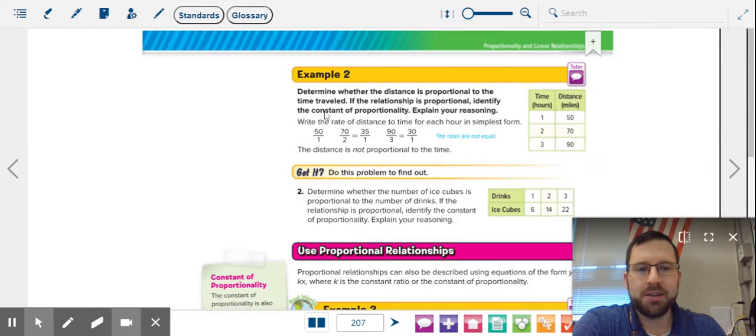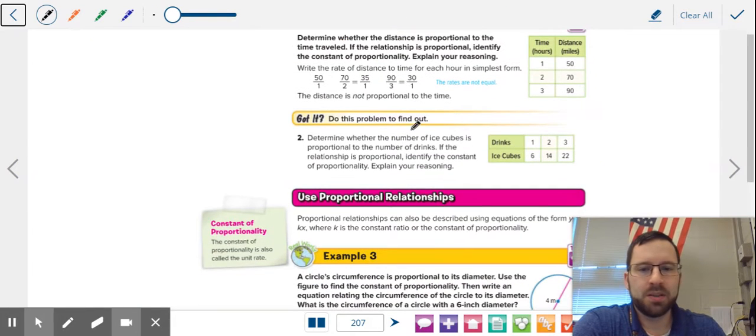On to the next page. Let's take a look at this one. We have the number of ice cubes and the number of drinks. So x comes first with a horizontal table, y comes second. 6 divided by 1 is 6, 14 divided by 2 is 7. So right there, it's not equal. This is not a proportion, but let's keep going. 22 divided by 3 is 7 and one-third, also not equal.